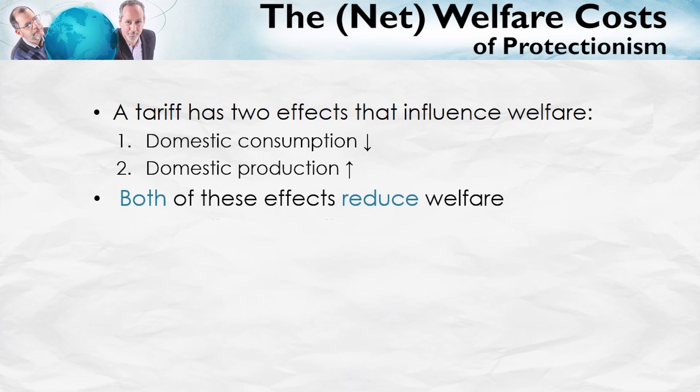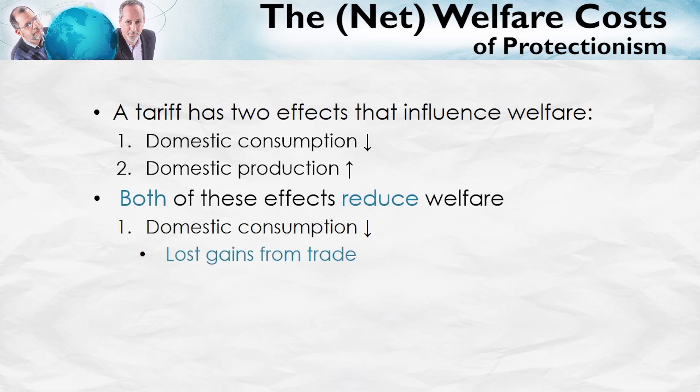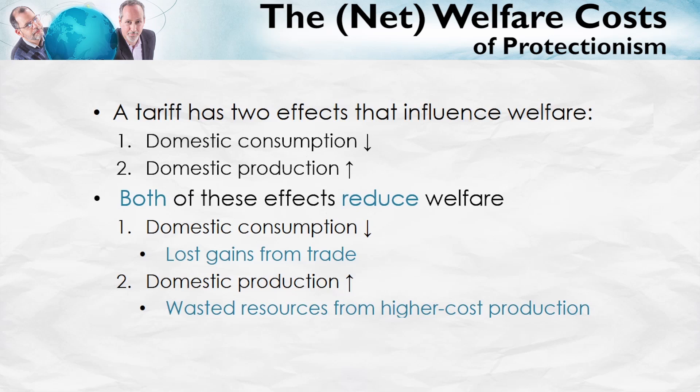And what I'm going to show is that both of these effects, somewhat surprisingly, reduce welfare. Why? Domestic consumption falls — the reason that reduces welfare is because there are lost gains from trade. Second, domestic production increases. You might think that's a good thing, except we're going to have wasted resources because the domestic producers have higher costs than the world producers.